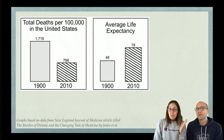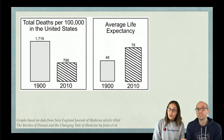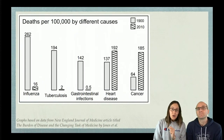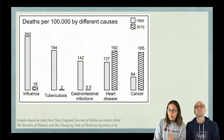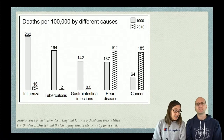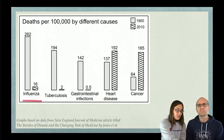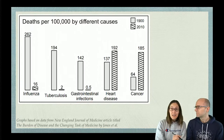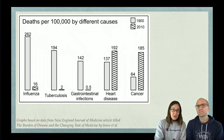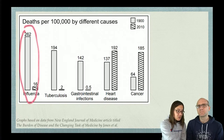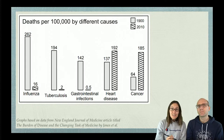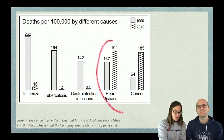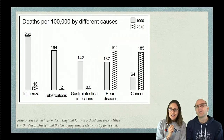If we look at the cause of death, we see something really interesting. In 1900, deaths from influenza, tuberculosis, and gastrointestinal infections — including things like hepatitis A and B — were really high compared to now. For example, 262 deaths per 100,000 are now down to 16 — a huge drop. But with heart disease and cancer, we see the opposite — an increase.